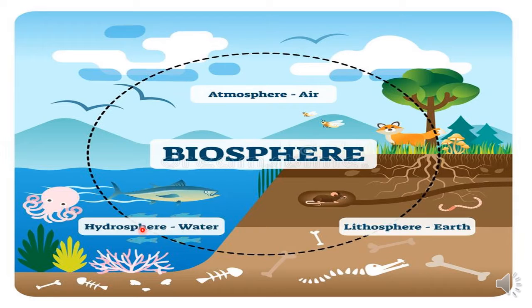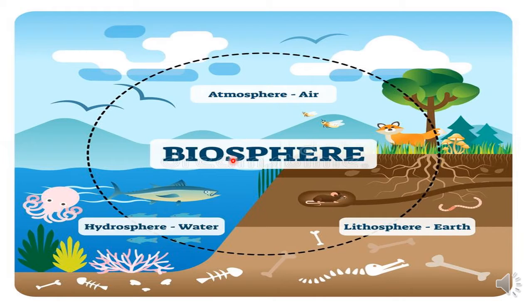If these three parts are present, then the biosphere exists. Biotic includes living organisms like fish, fox, fungus, plants — all of these. This is the biotic environment. Abiotic and biotic together form the biosphere.